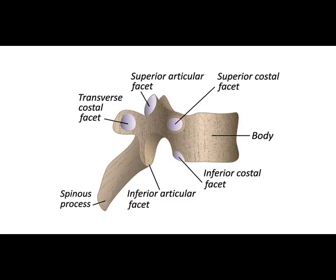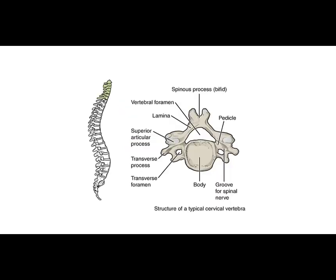Note that with a thoracic vertebra we have facets to accommodate the ribs, known as the costal facets. If you look at a typical lower cervical vertebra, you'll notice that there is a foramen in the transverse process to accommodate the cervical arteries.